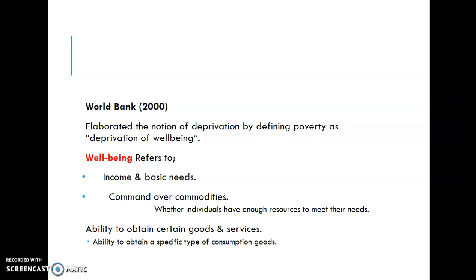Well-being includes command over commodities, meaning whether individuals have enough resources to meet their needs, and the ability to obtain certain goods and services. When someone lives in society, they must be provided with job opportunities to raise their income and improve their lifestyle by buying goods — food, housing, and services — and this is the responsibility of the state.